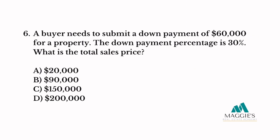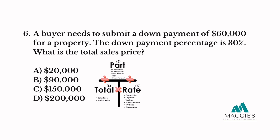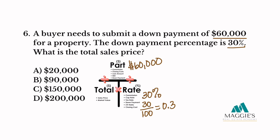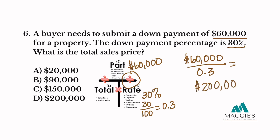Number six. A buyer needs to submit a down payment of $60,000 for a property. The down payment percentage is 30%. What is the total sales price? We have the down payment of $60,000 going up on top, and the down payment percentage of 30% going in the rate column. Convert your percent to a decimal by dividing by 100: you get 0.3. Now all that's left to do is divide: $60,000 divided by 0.3 equals $200,000. So the answer to this one is D.